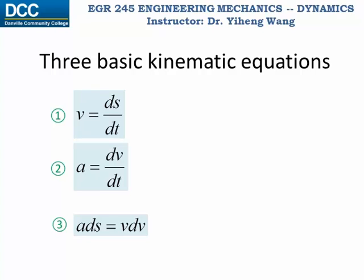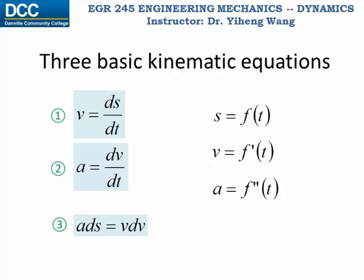Before we start the discussion of erratic motion, let's again take a look at the three basic kinematic equations. These tell us that if the position s is the original function f of time t, then the velocity v is the first derivative function f' and acceleration a is the second derivative function f''. We learned from calculus how to graph an original function as well as its derivative functions.